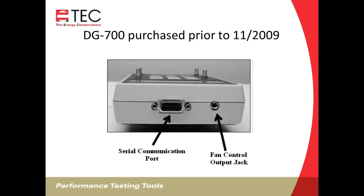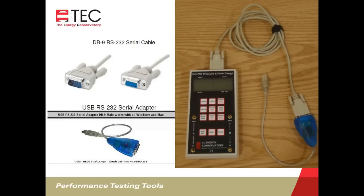For DG700s purchased prior to November of 2009, you can still connect to a laptop — you'll just use different cabling. Every DG700 ever made came with a serial port. The traditional approach uses two cables: a serial cable — a DB9 RS-232 cable — and then an adapter to get into your computer. In the old days, computers had serial ports built in, but with subsequent versions of Windows they pretty much eliminated serial ports. What you're looking for is a 9-pin serial port, and most modern computers do not have that.